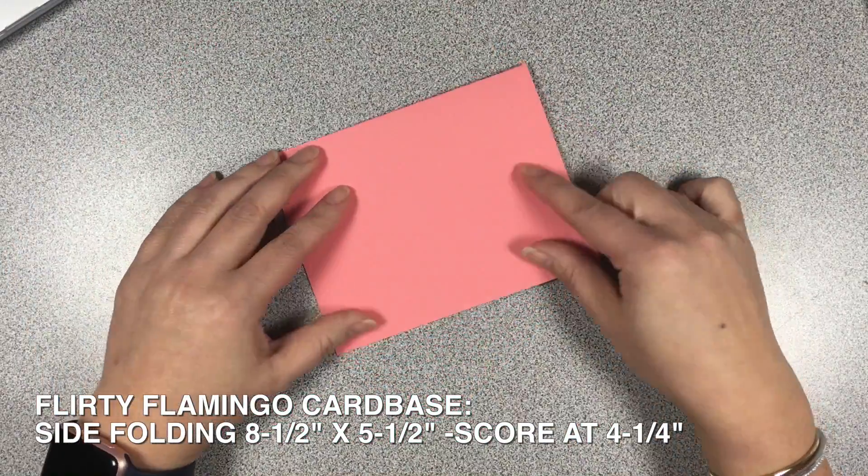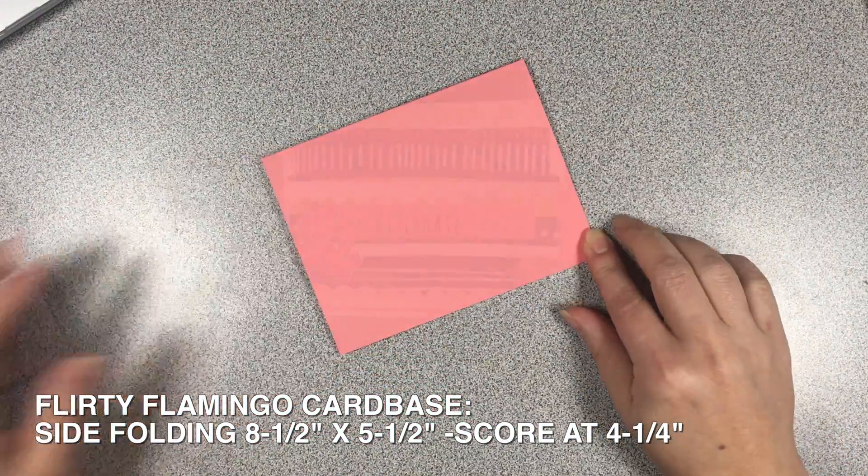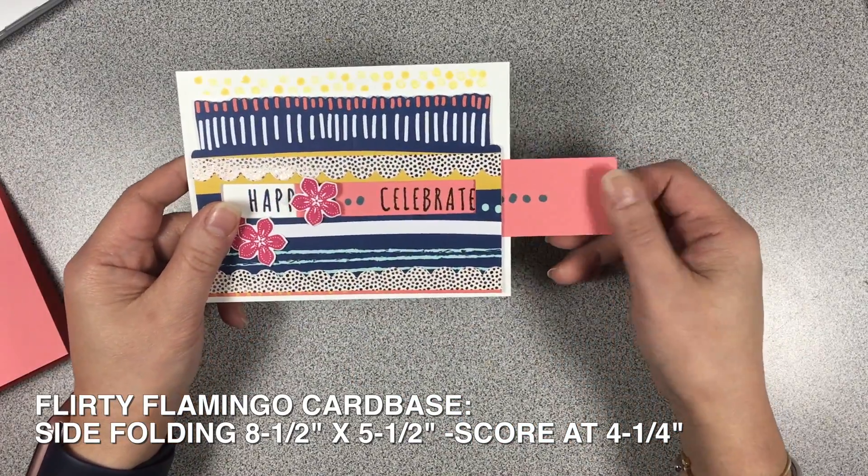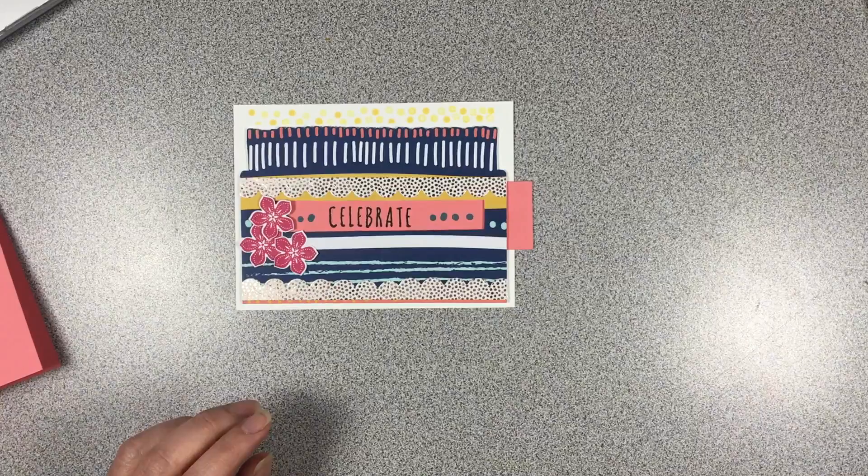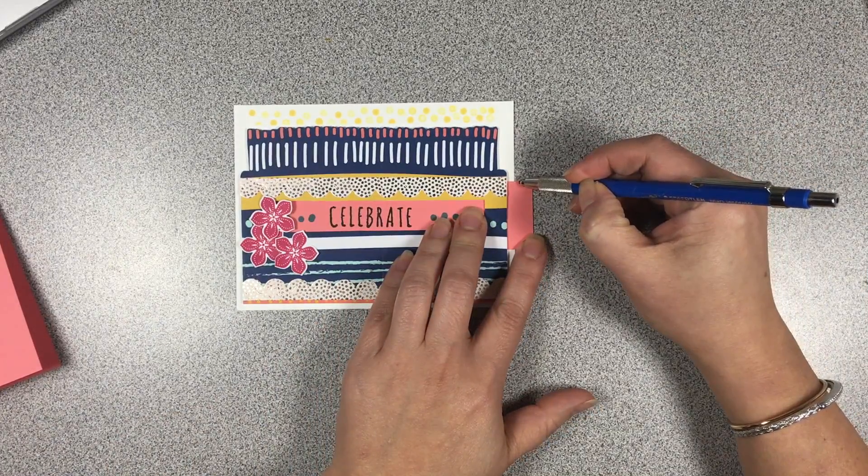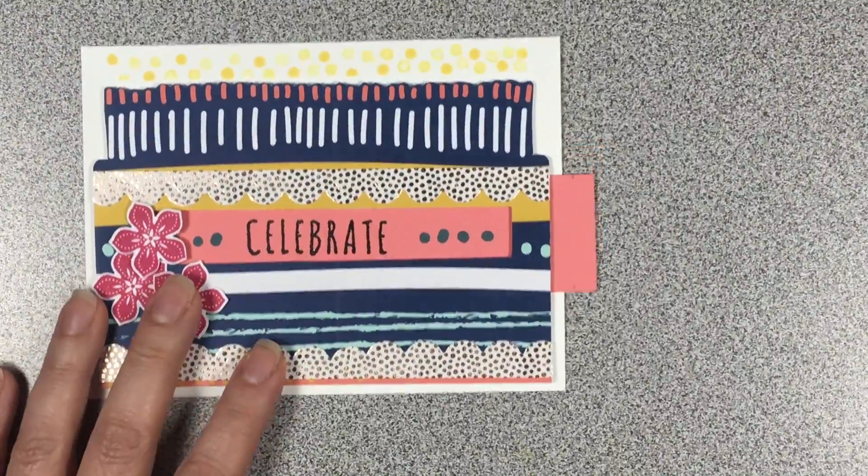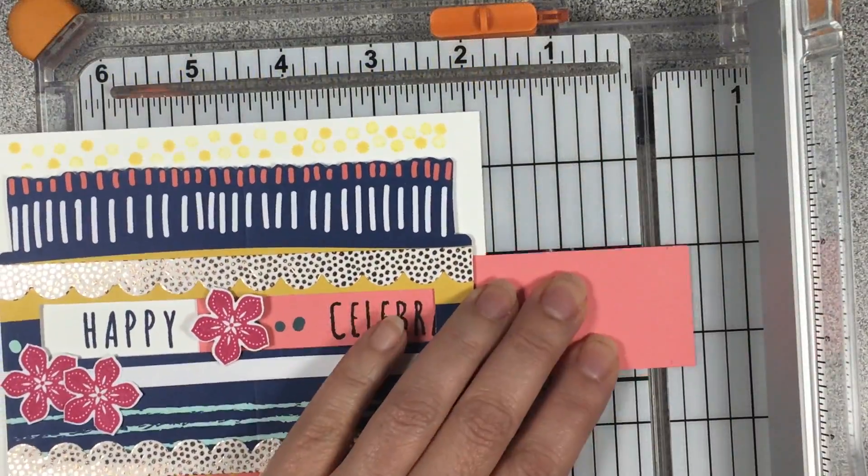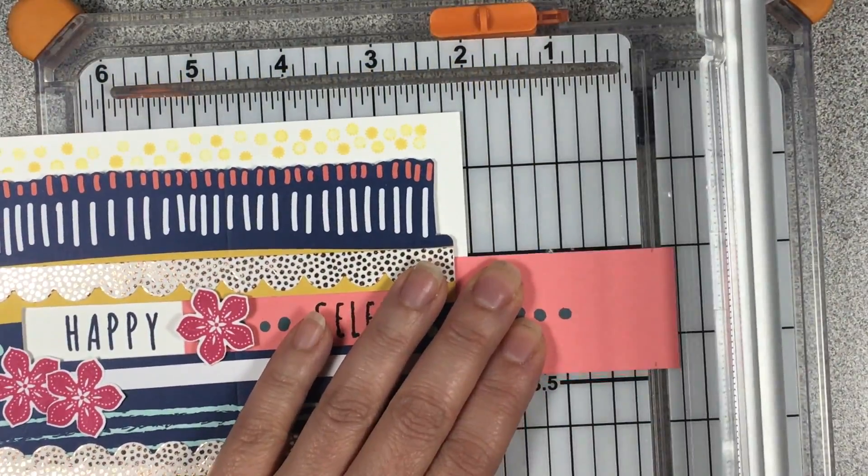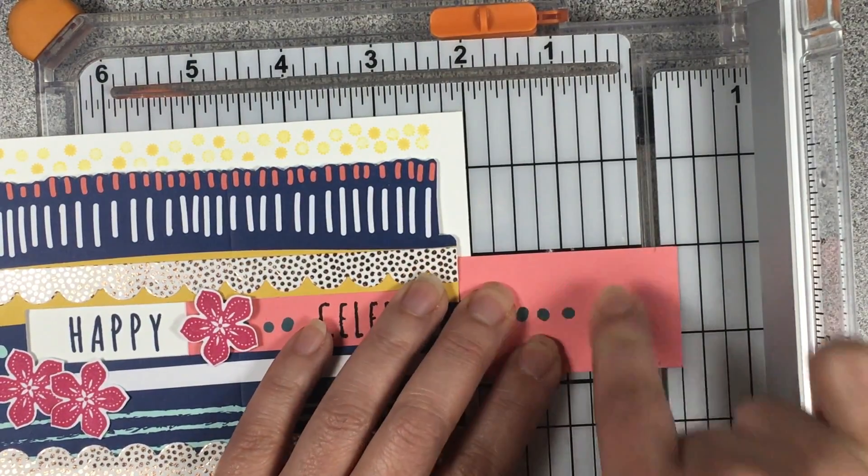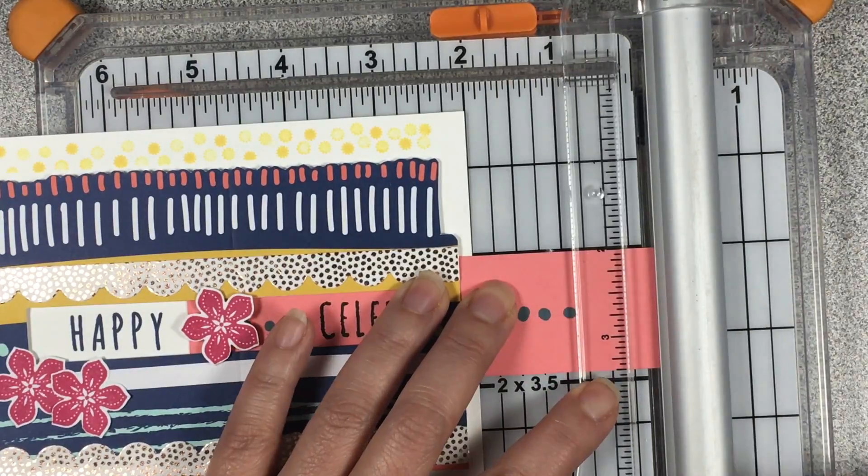We're going to create a side folding card base measuring eight and a half by five and a half, scored at four and a quarter, and then we'll shorten that Flirty Flamingo tab. We're going to take off about a good quarter inch, pull out that piece a bit, and then line it up on the trimmer just to make sure that it's somewhat straight when you cut it down.